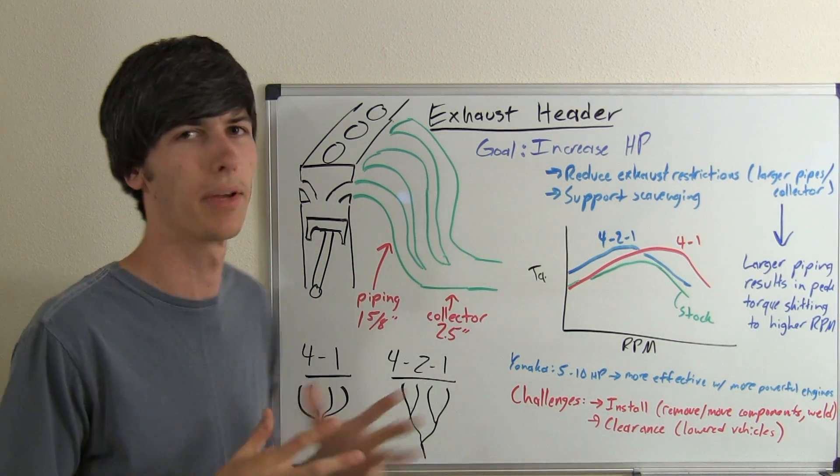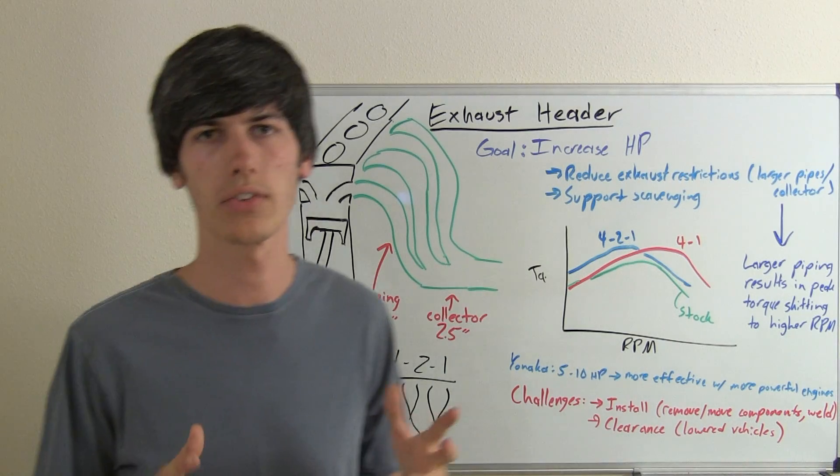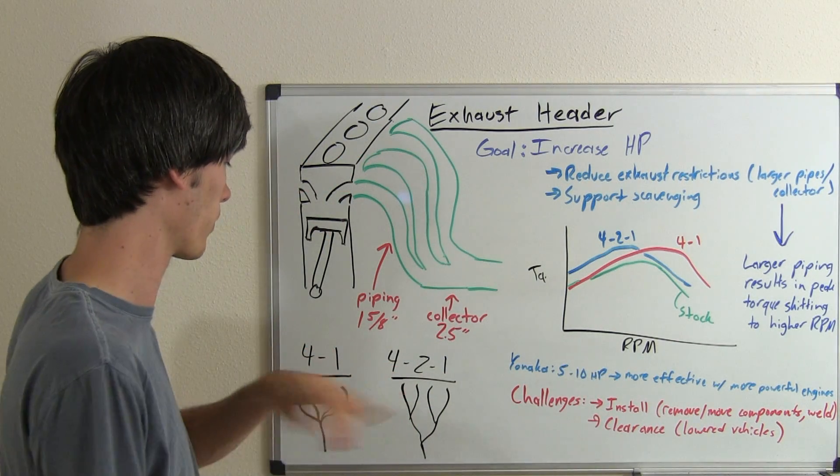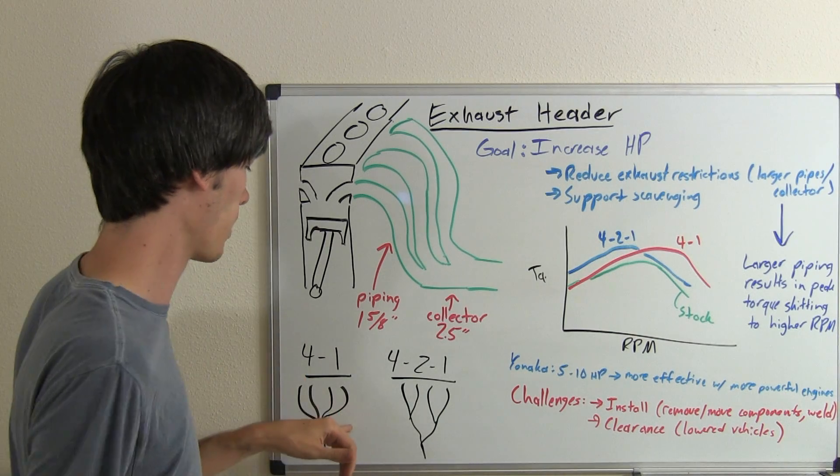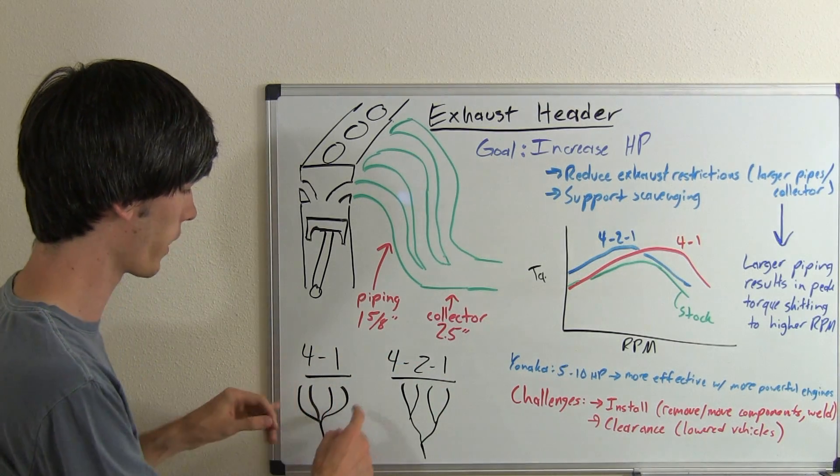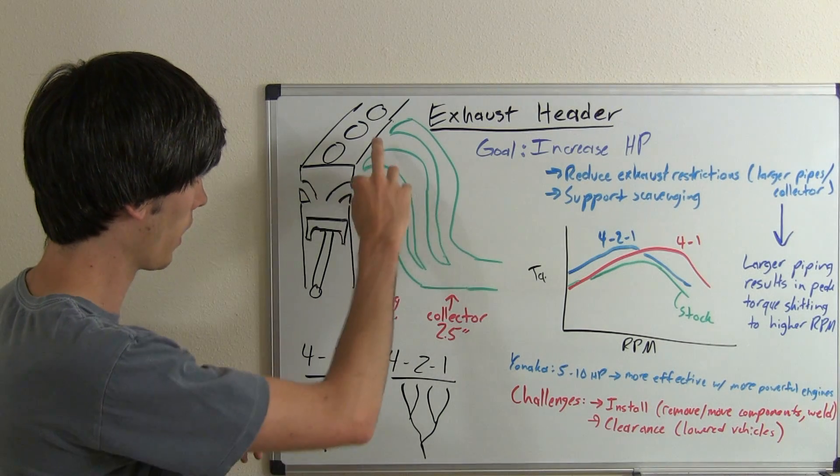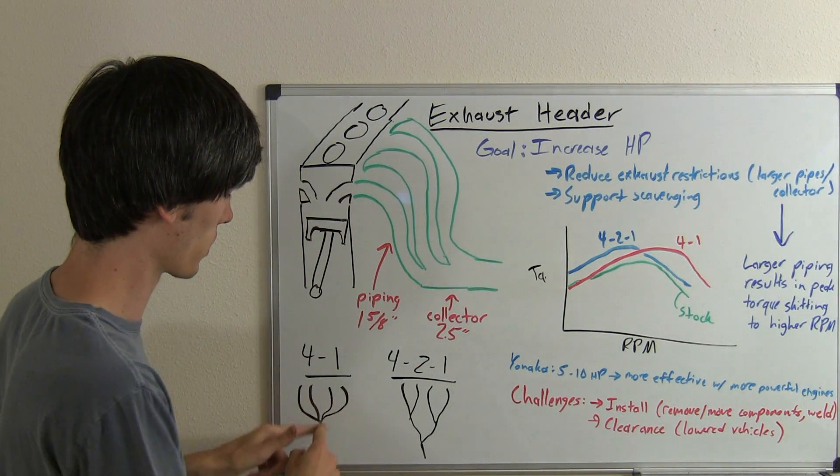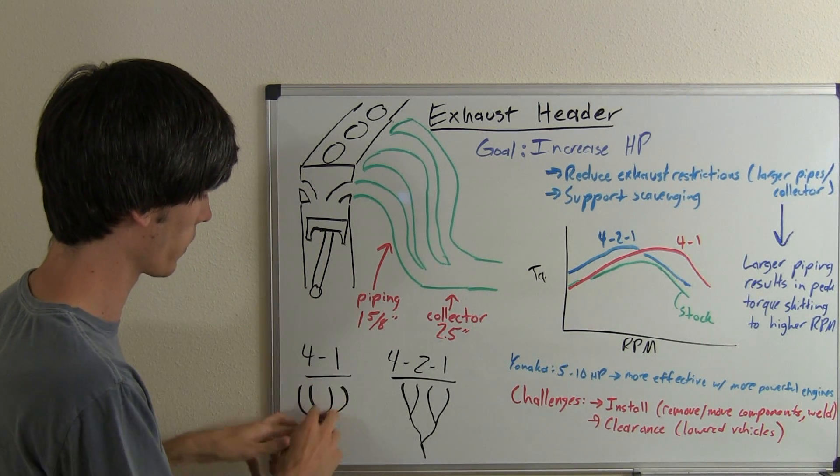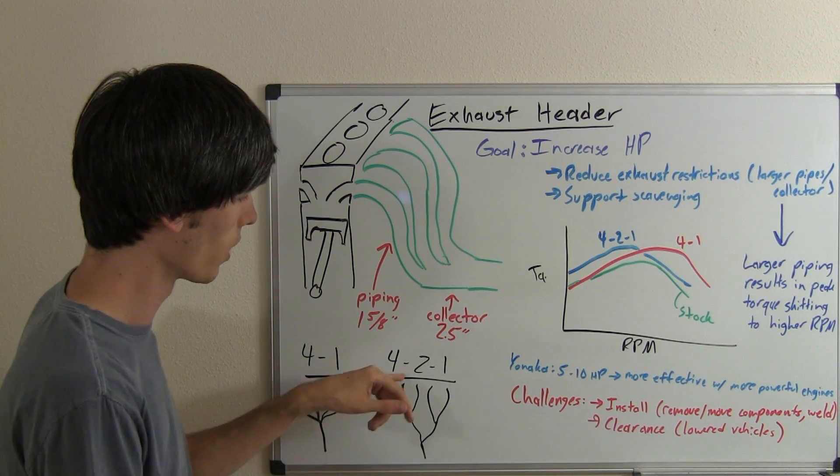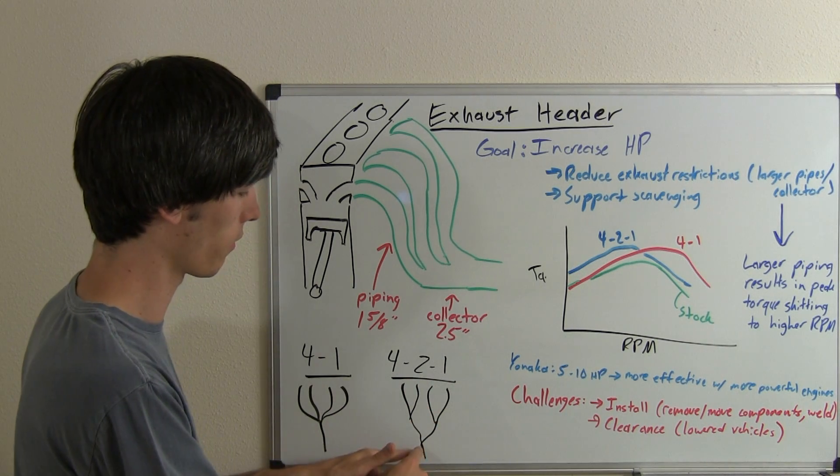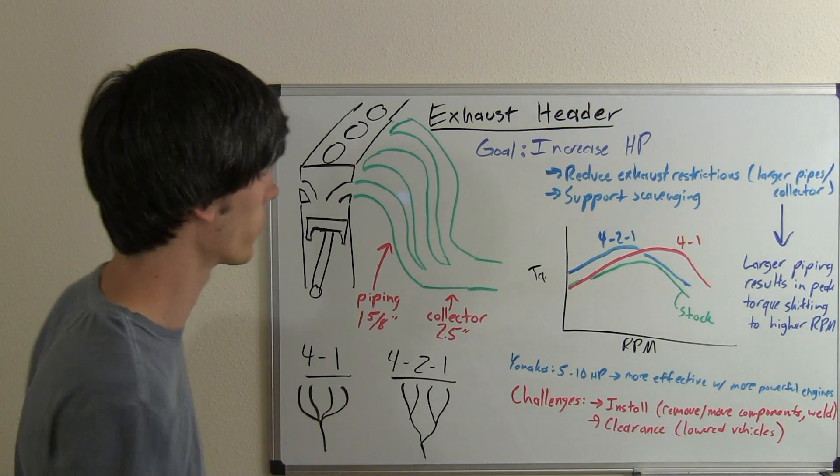One of the things that's common with aftermarket exhaust headers, especially in the Honda Acura Japanese market world where we've got four cylinder engines, is a 4-to-1 header or a 4-to-2-to-1 header. Basically, all that is describing is how the piping joins together and finally forms into one. With the 4-to-1, you take all four and then they just go to one, just like the name says. With the 4-to-2-to-1, two of the pipes join together and then finally they all meet after that.